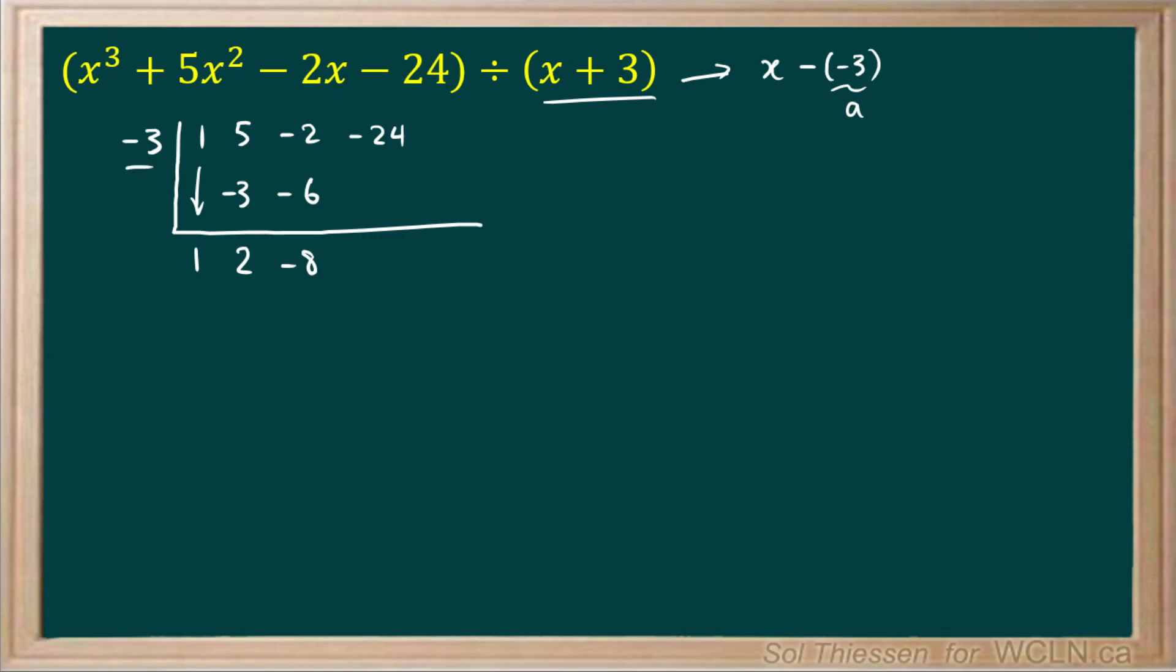Then I multiply negative 3 times negative 8 to give me positive 24. Then I have negative 24 plus 24, which gives me 0. Now I've reached the end of my synthetic division.